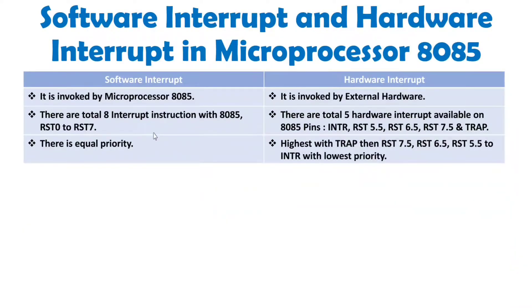For software interrupt, all interrupts have equal priority because 8085 can execute only one instruction at a time — RST0, RST1, RST2, or RST7 cannot execute simultaneously. For hardware interrupt, multiple interrupts may occur at the same time. The highest priority is given to TRAP, then RST7.5, then RST6.5, then RST5.5, and the lowest priority is assigned to the INTR line.